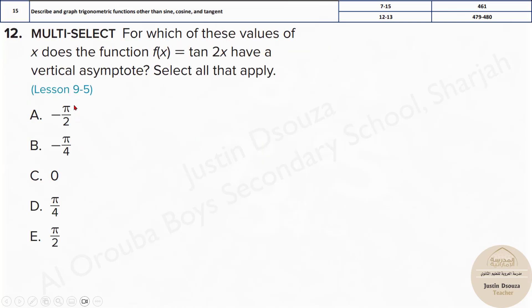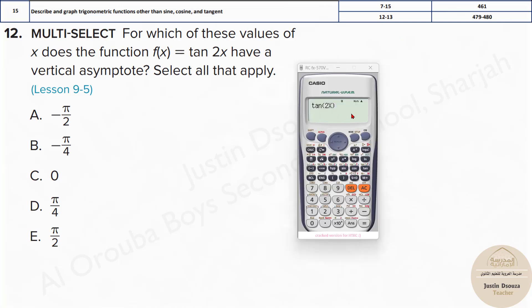Now for question 12, they've given you this function f(x) = tan 2x and asked which are the vertical asymptotes. This can also be easily done in calculator. Just type the given function and calculate at different x values. Let's start. Minus π by 2, that is minus 180 divided by 2—you can write directly minus 90. Here we have 0. If there's an asymptote, we should get a math error. So this is not true.